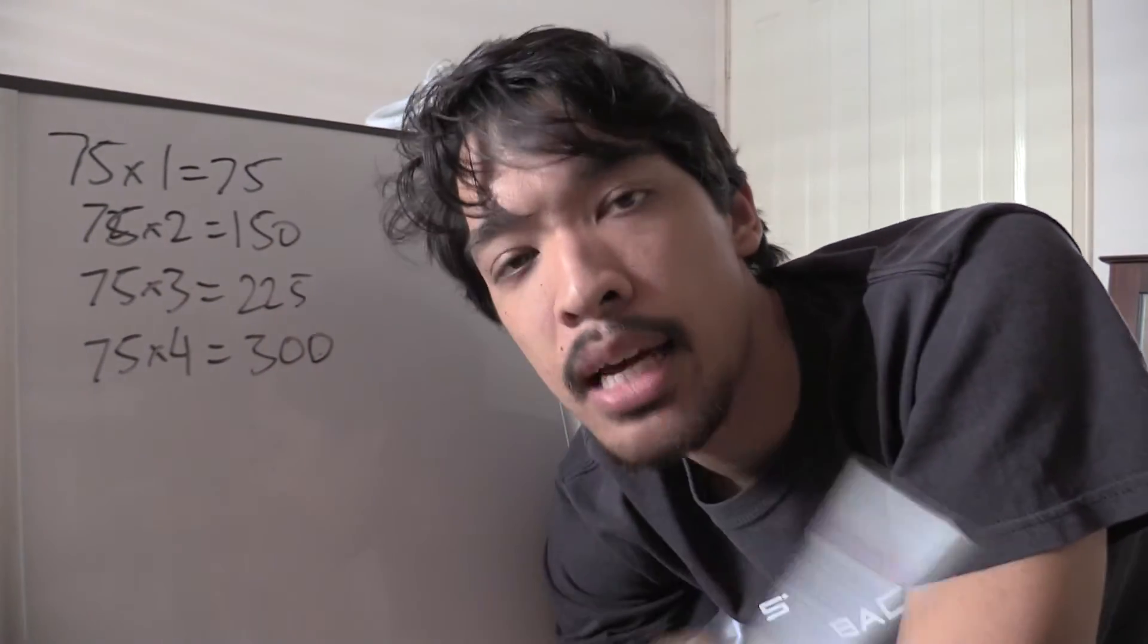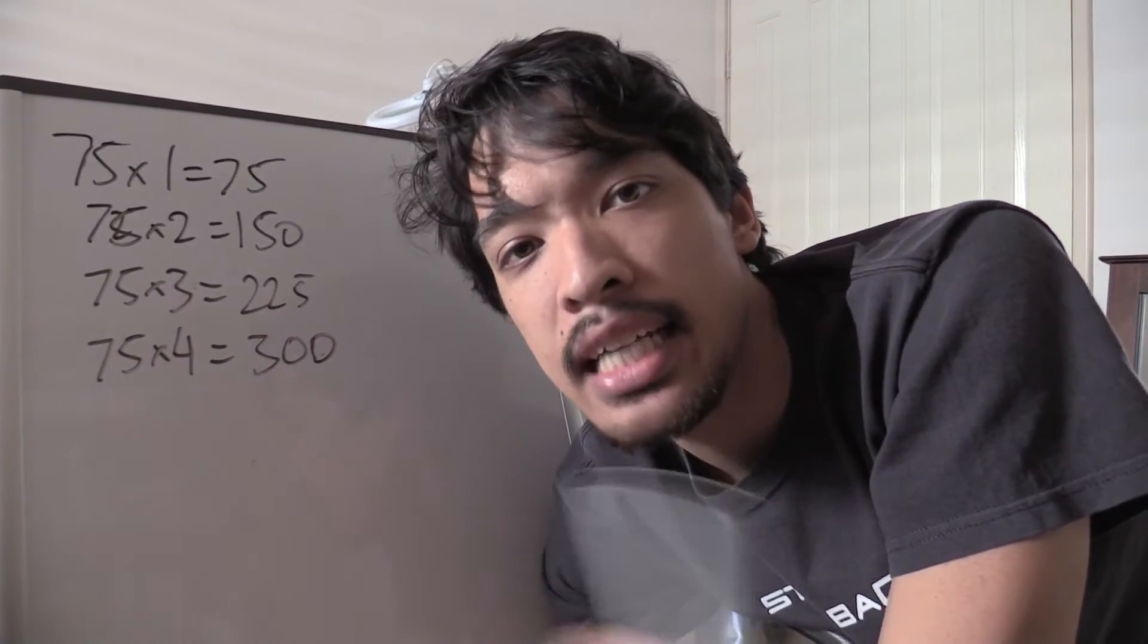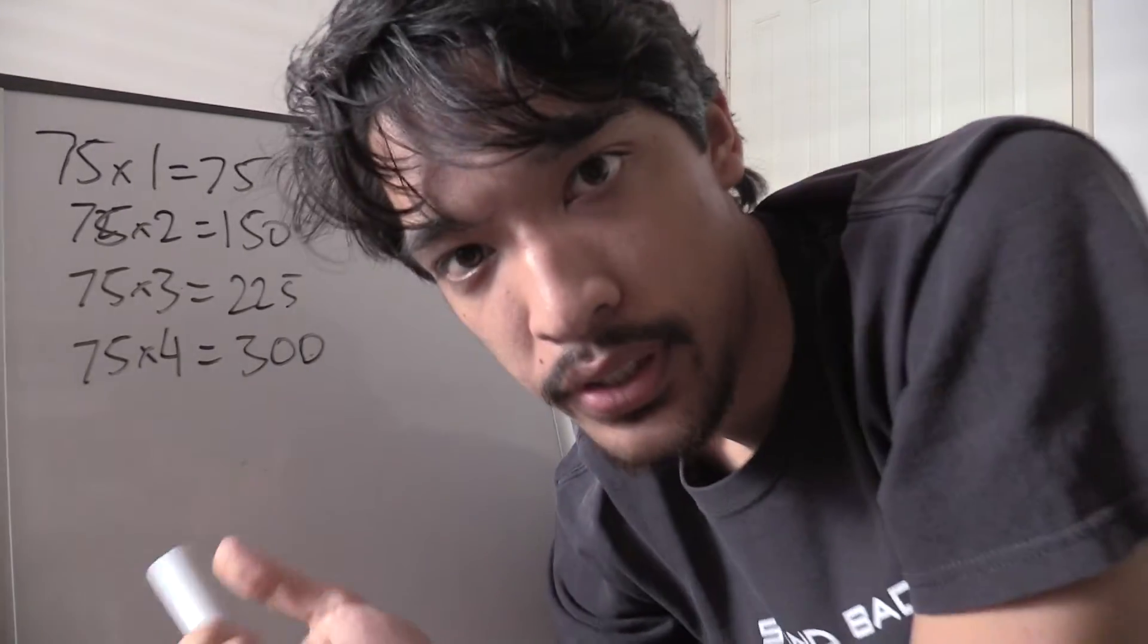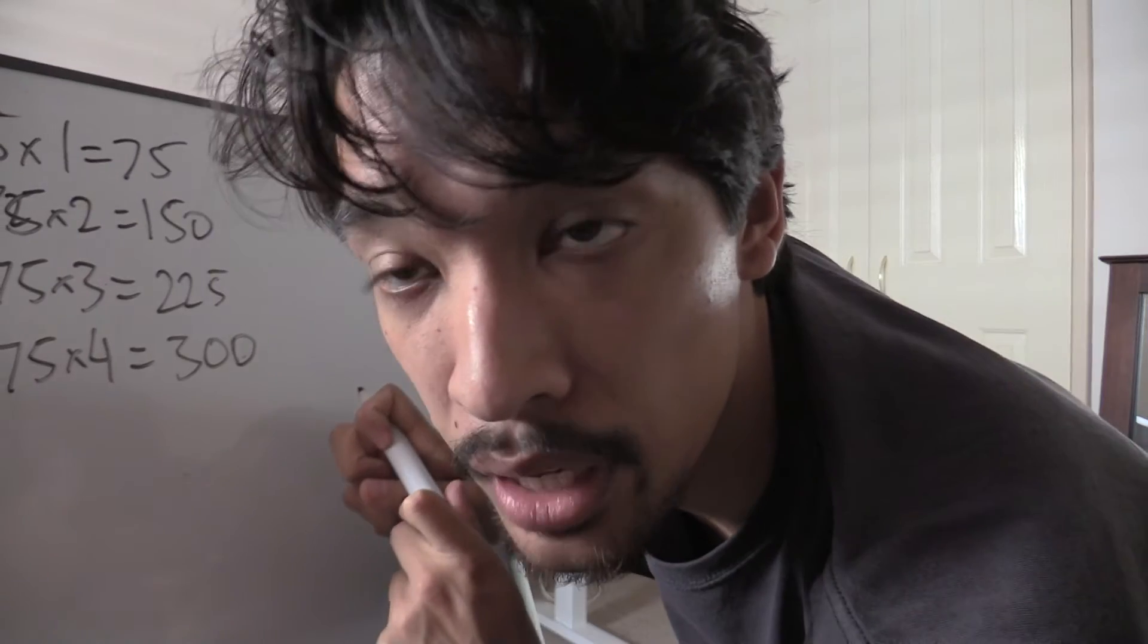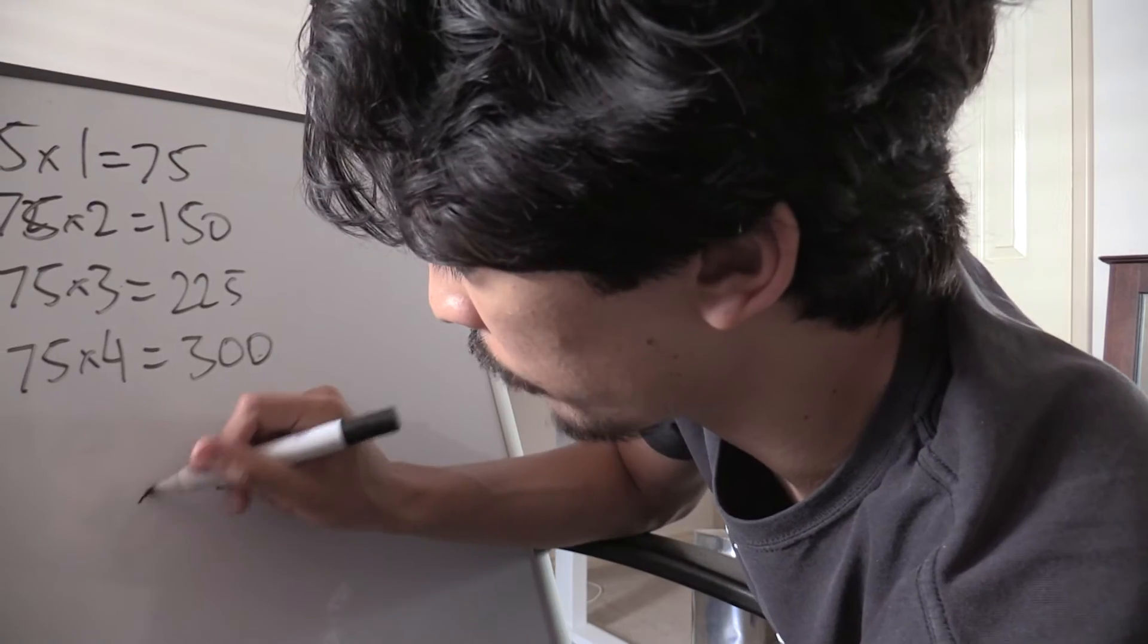Now the thing you have to remember with numbers is that they're made up of smaller numbers. So for example, take a number 8 because 8 is a nice number. If you want to do 8 times 75...